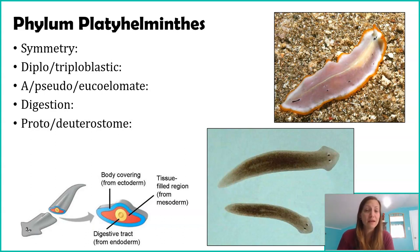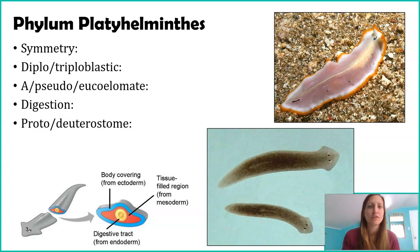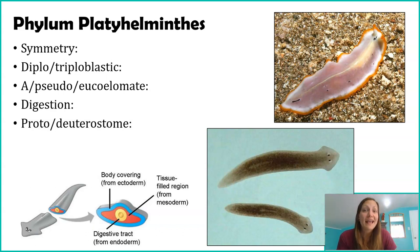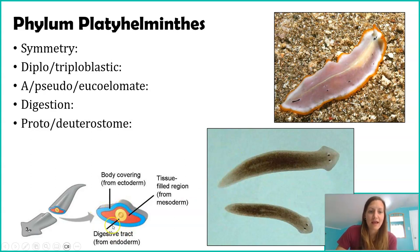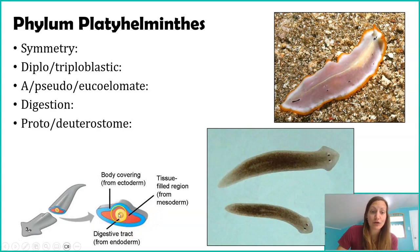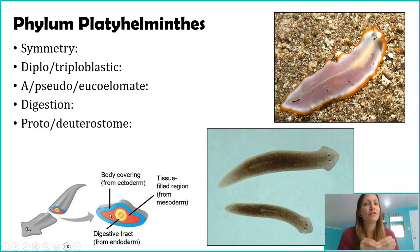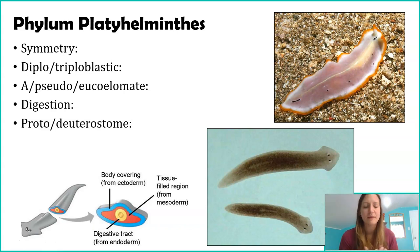These guys are kind of unique when we're talking about coelomates. Since they're triploblastic, we can use one of those three terms. This is our only phylum that we're going to see that are acoelomate. Looking at the diagram, they have that ectoderm in blue, they have that endoderm in yellow, and then the mesoderm completely fills up the space where a coelom could have been, but there is no coelom.